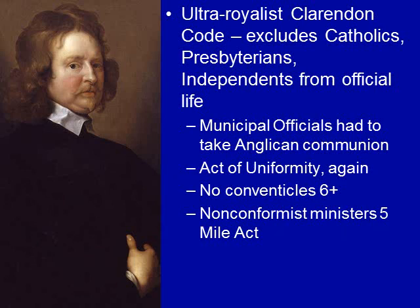The Act of Uniformity was established again. There would be no conventicles — meaning people couldn't gather in groups of six or more to discuss religion. Nonconformist ministers had to deal with a five-mile act: they couldn't go to towns and had to stay five miles away, and couldn't go within five miles of places where they used to study. This was designed to keep them from being able to spread their faith.